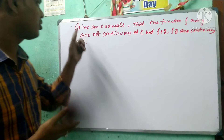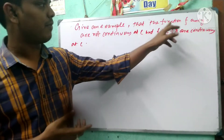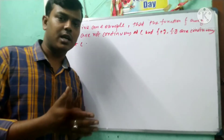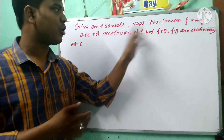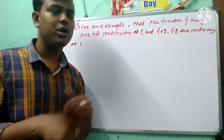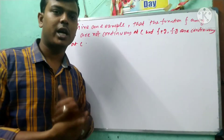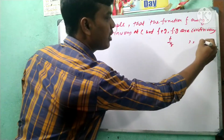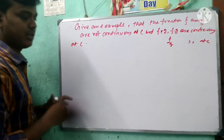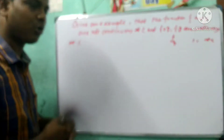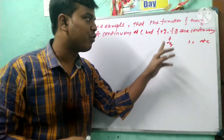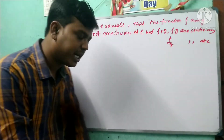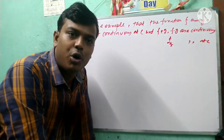First, this question gives an example that the functions F and G are not continuous at C. If F and G are not continuous at C, when we add these processes, F and G remain not continuous at C. We have to see the continuity of this combined function.